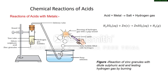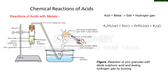In this video we will discuss the chemical reactions of acids, starting with chemical reactions of acid with metals. Acid reacts with a metal to form salt and hydrogen gas. For example, sulfuric acid H2SO4 when reacted with zinc forms zinc sulfate and hydrogen gas is evolved.